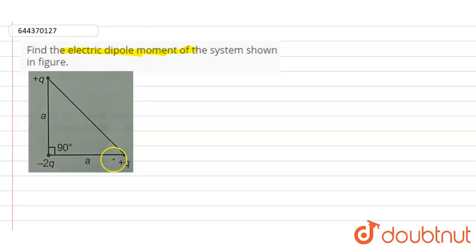This figure looks like a right angle triangle because we have the angle 90 degrees right here. We have the sides with charges +q, -2q, and +q. The length and breadth values are a.